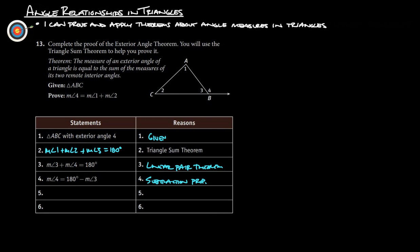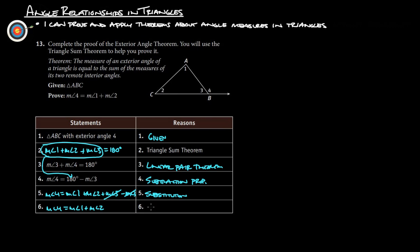For the last two steps: we substitute measure of angle 1 plus angle 2 plus angle 3 in for 180 — since we know those three angles equal 180 from the triangle sum theorem. That gives us measure of angle 4 equals measure of angle 1 plus measure of angle 2 plus measure of angle 3 minus measure of angle 3. Simplifying — the measure of angle 3 terms cancel out — and we get measure of angle 4 equals measure of angle 1 plus measure of angle 2, which is what we needed to prove.